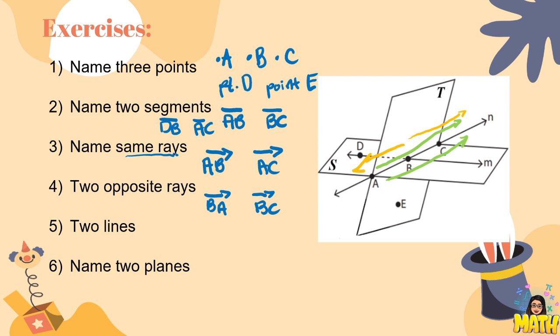Next, let's name two lines. We can name a line using two points on it. We can name line AC and line DB. Or we can simply use one letter. We can name line AC as line N or line DB as line N.